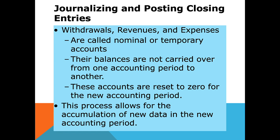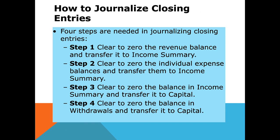Some businesses do this on a monthly or quarterly basis to track net income and the ending capital account, but if they do it, they normally reverse it back to zero. At the end of the year you most definitely have to do this closing procedure. Let's look at the steps to journalizing closing entries. Step one: clear out or zero out the revenue balance and transfer it into income summary — a temporary account we create just for the closing procedure.